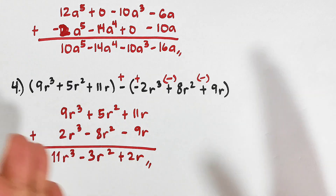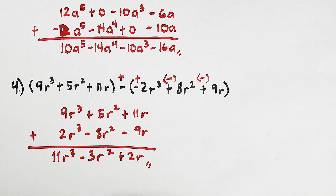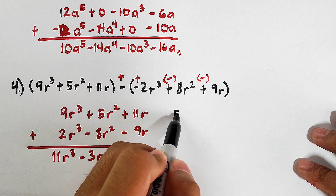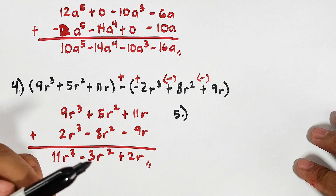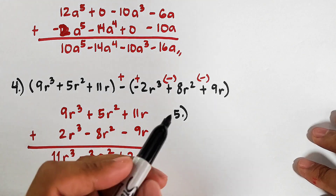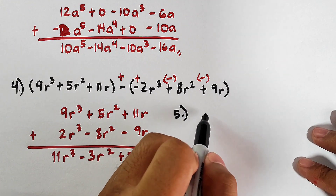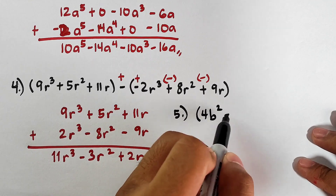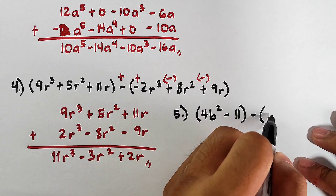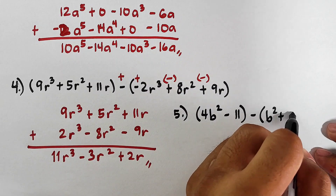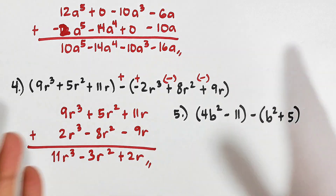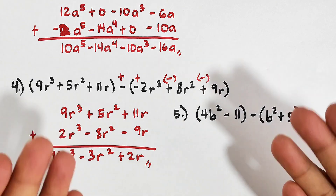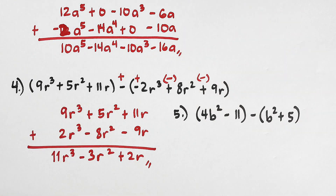I went through the content a bit fast, but you can replay the video for any parts where you felt it moved too quickly. I hope you learned from the examples. I will give you example number 5 as part of our routine — please solve it and share your answer in the comment section. The problem is: the quantity of 4b squared minus 11, minus b squared plus 5. If you are new to my channel, don't forget to like and subscribe and hit the bell button for updates. Again, it's me Teacher Gone — maraming salamat, bye bye!